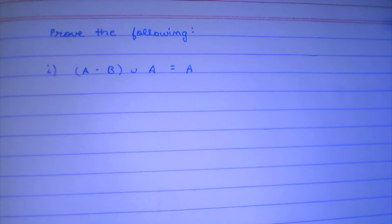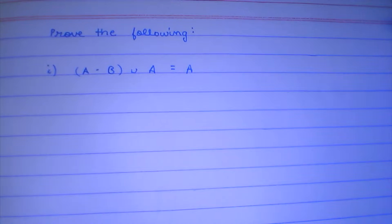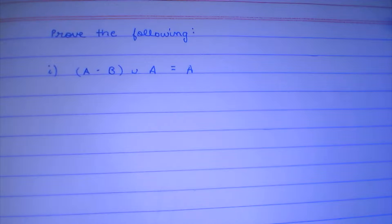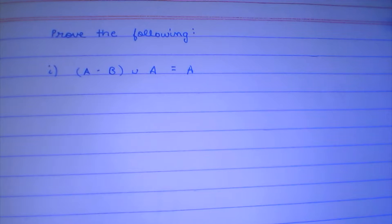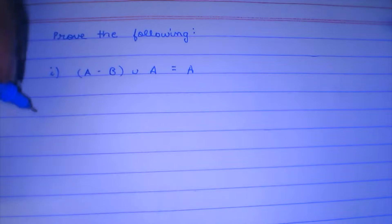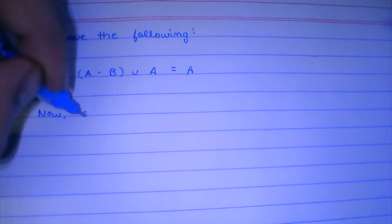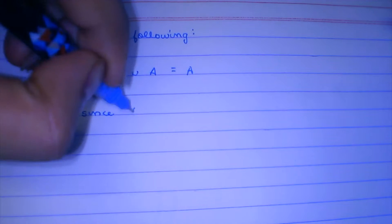Let us start with the first one. We have to prove that (A minus B) whole union with A is equal to A. And if you look at it, it is really true, but we will do it analytically. To prove that two sets are equal, one of the ways is to prove that the LHS is a subset of RHS and the RHS is also a subset of LHS, and in that case they are going to be equal. That's exactly what we are going to do.